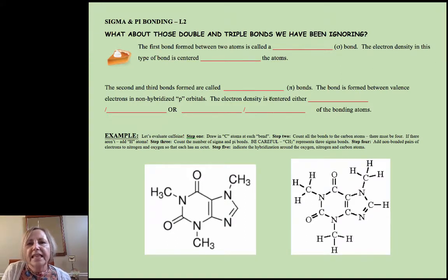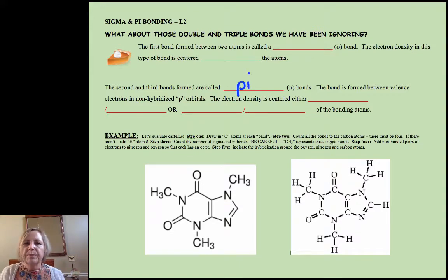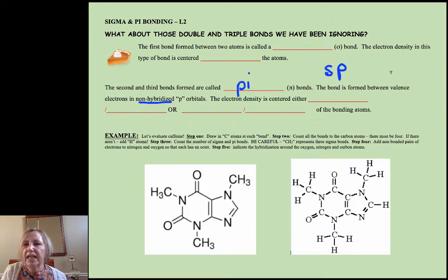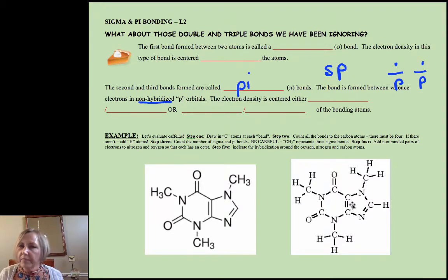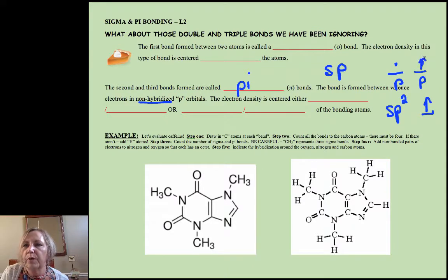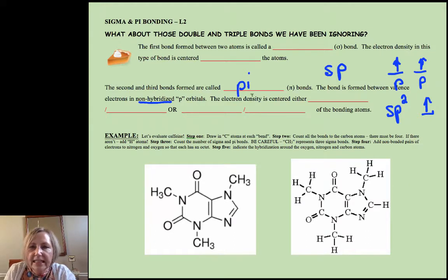The second and third bonds are called pi bonds. What we're looking at here are non-hybridized p orbitals. If I have an SP hybridization, I still have two p atomic orbitals with electrons in them and there can be overlap there. If I have an SP2 hybridization, I still have a p orbital that has an electron in it with a possible overlap. So that's what we want to be looking at.